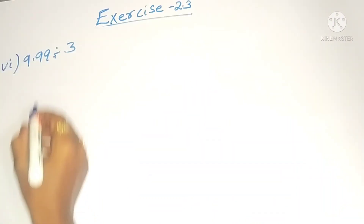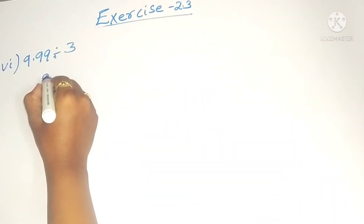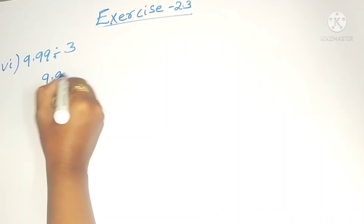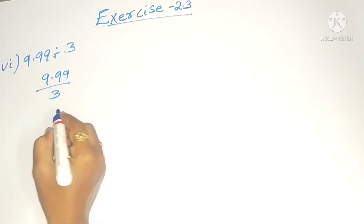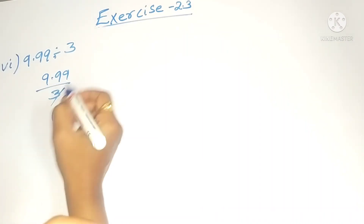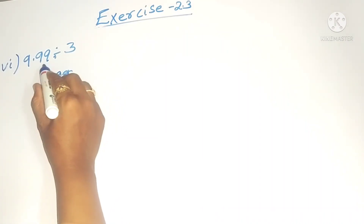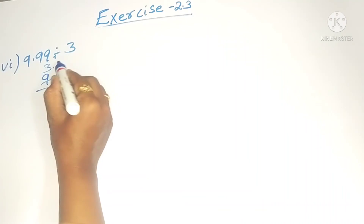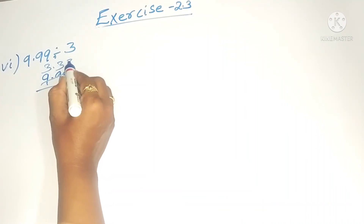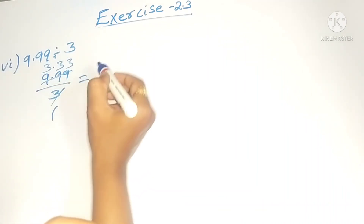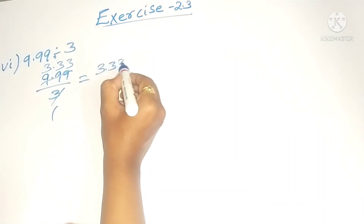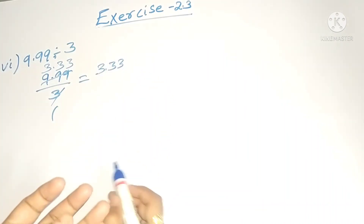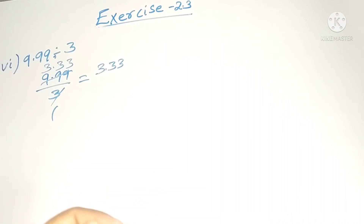The sixth one: 9.99 divided by 3. You can cancel very easily — three threes are nine, three threes are nine, three threes are nine. So it will be 3.33.